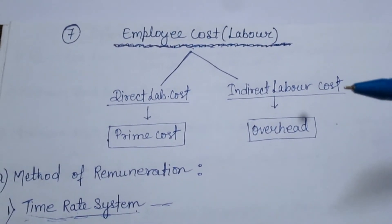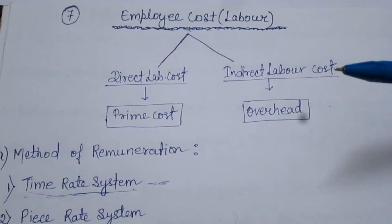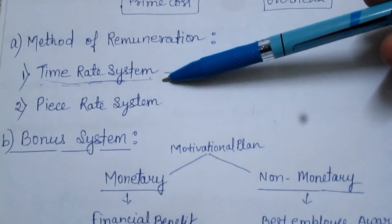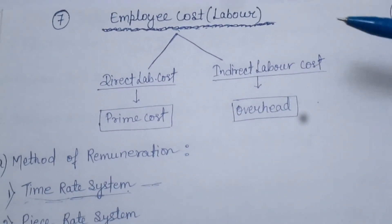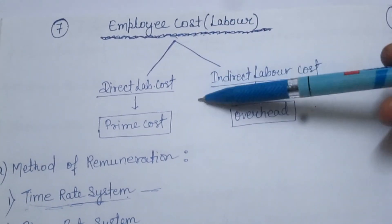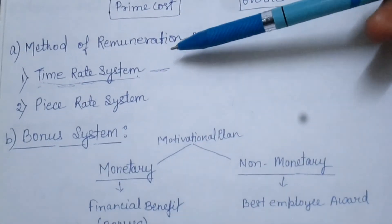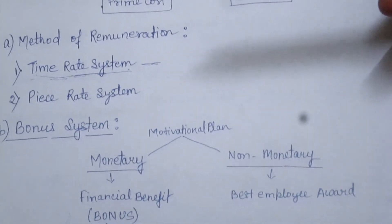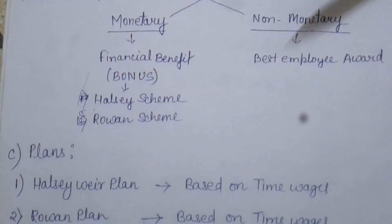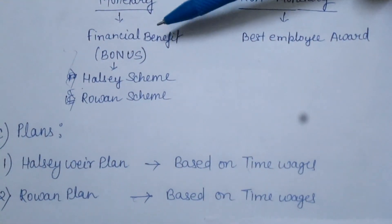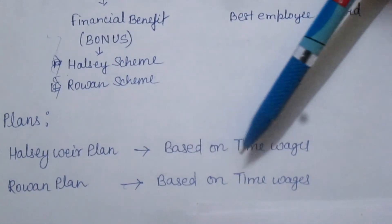आज का वीडियो सिर्फ theoretical base पे था, मैं इस वीडियो को ज्यादा lengthy नहीं करना चाहती. एक वीडियो जल्दी upload करने वाली हूँ जिसमें हम पढ़ने वाले हैं Time Rate System, Piece Rate System और Halse plan and Rowan plan की numerical questions. आज हमने Employee Cost and Labor Cost का basic concept discuss किया. Direct Labor जो होता है वो Prime Cost का part होता है. Method of Remuneration दो तरह के होते हैं, और दोनों plans — Halse plan and Rowan plan — time wages पर based हैं.